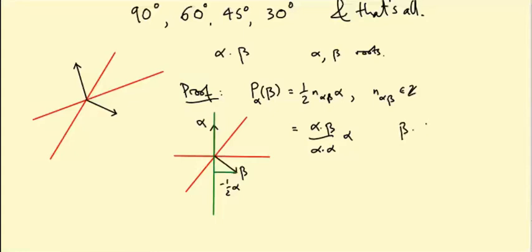And then you multiply that by the unit vector in the α direction, which is α over √(α·α). If you expand that out, this is what you get.